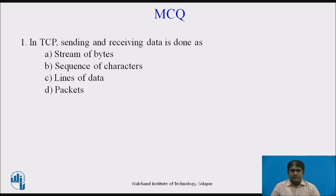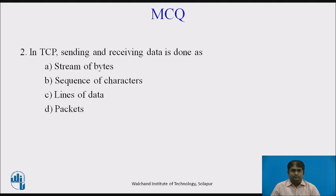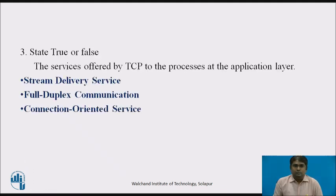Now pause the video and attempt the MCQ. In TCP, sending and receiving data is done as: A) stream of bytes, B) sequence of characters, C) lines of data, or D) packets. The answer is A — stream of bytes. True or False: the services offered by TCP to the processes at the application layer include Stream Delivery Service, Full-Duplex Communication, and Connection-Oriented Service. The answer is True.